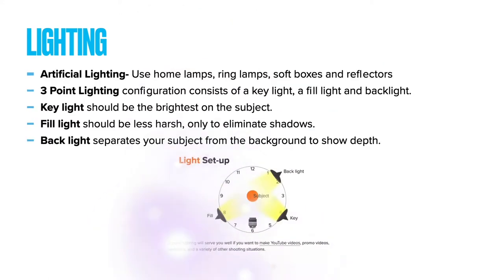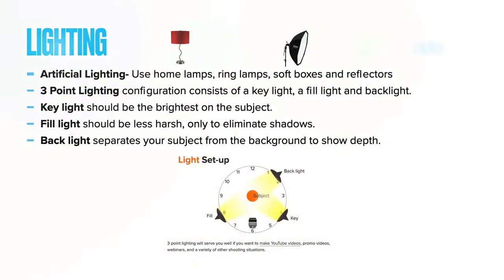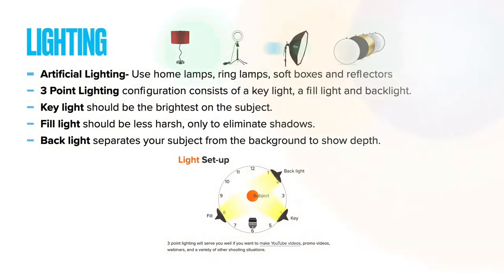Artificial lighting. Use home lamps, ring lamps, soft boxes, and reflectors. Three-point lighting is a configuration that consists of a key light, a fill light, and a backlight, as we've seen in the last slide. Key light should be the brightest on the subject. Fill light should be less harsh, only to eliminate the shadows in the background. Backlighting separates your subject from the background to show depth.